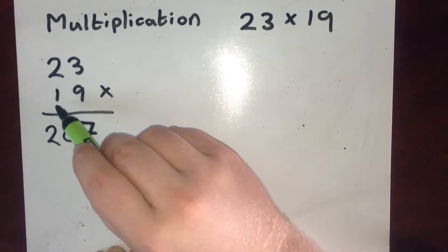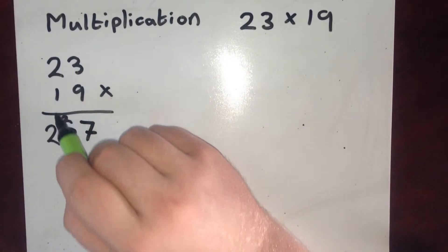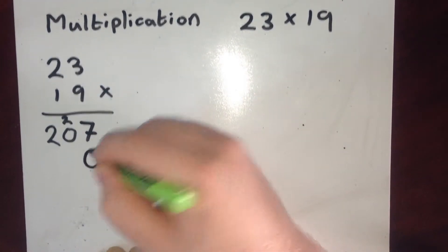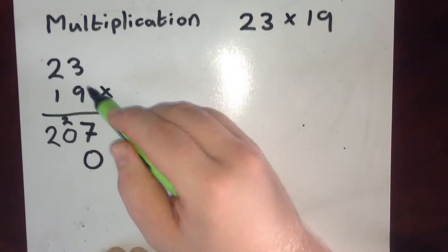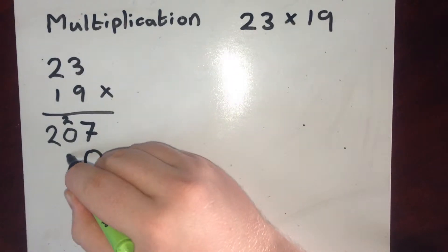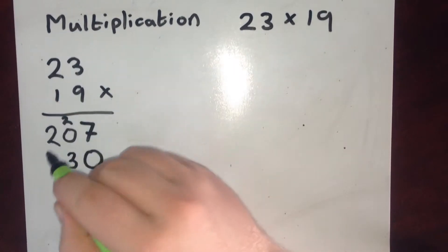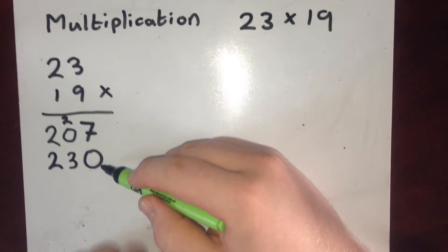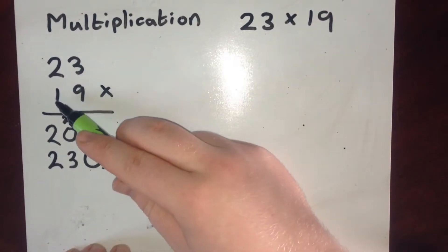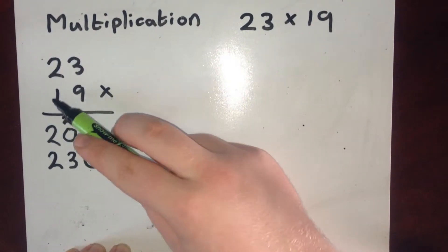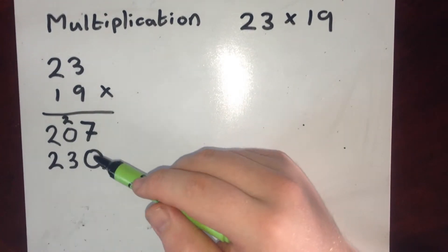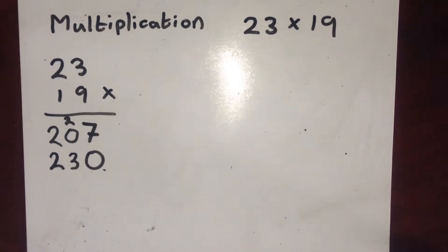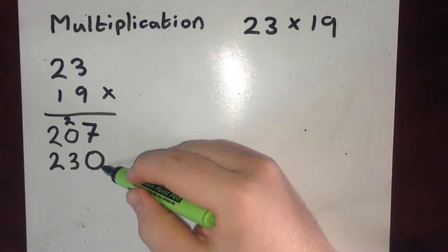I can then work on the next bit. So this 1 is actually a 10. Because it's a 10 I need to write a 0 down before I start. So 1 multiplied by 3 is 3. 1 multiplied by 2 is 2. If I hadn't written this 0 down to start with, and I had just done 1 times the 3 is 3 and 1 times the 2 is 2, my answer would only be 23. Now 23 is a big difference from 230. So it's very important that we have this 0 in.